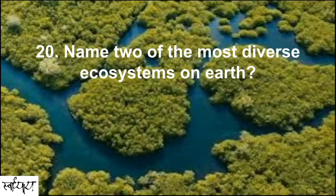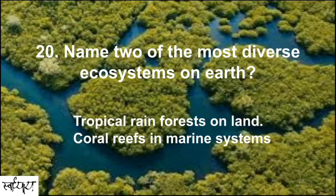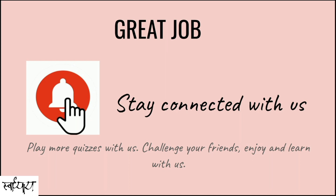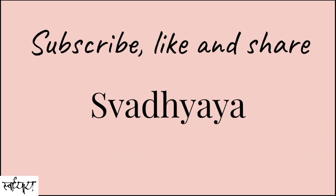Name two of the most diverse ecosystems on Earth. Answer: Tropical rainforests on land and coral reefs in marine ecosystems. Great job! Press the bell icon and stay connected with us. Get notified about every new quiz on Swadhyay. If you like this video, subscribe, like, and share Swadhyay. Thank you!